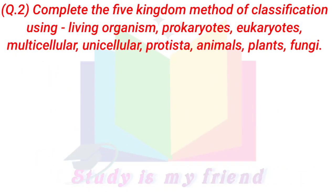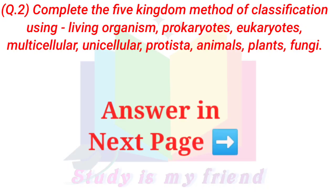Question 2: Complete the 5 Kingdoms Method of Classification using living organisms. The categories include: Prokaryotes, Eukaryotes, Multicellular, Unicellular, Protista, Animals, Plants, and Fungi.